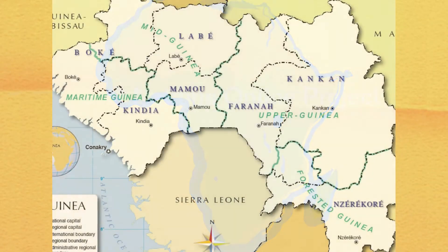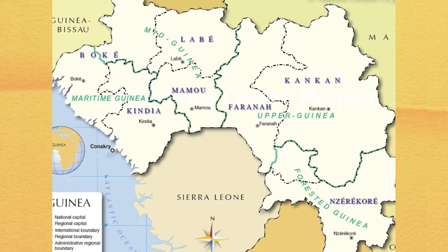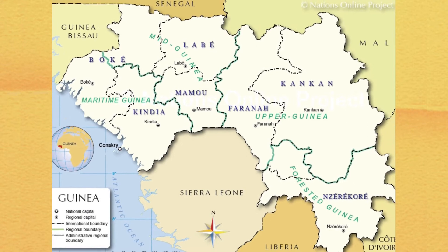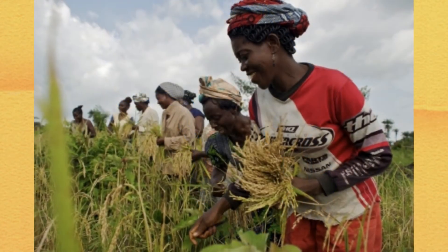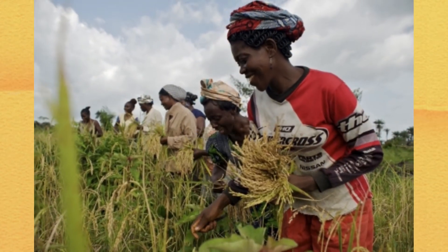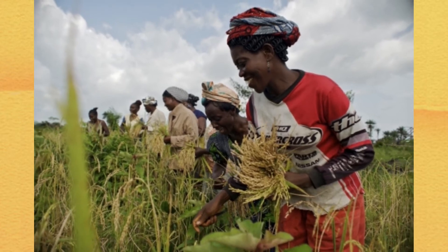Guinea is divided into eight administrative regions, which are subdivided into 33 prefectures. The majority of Guineans work in the agriculture sector, which employs approximately 75% of the country.